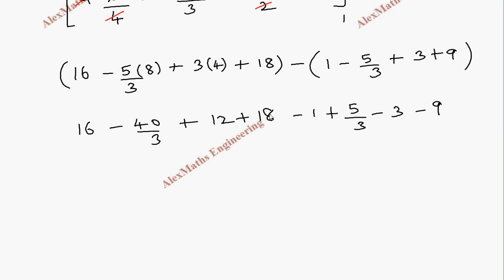...plus 12 plus 18, so all these numbers together is 46. Then we have -1 - 3 - 9, total -13. Then we have -40/3 + 5/3, which is -35/3. After subtracting these two we get 33.